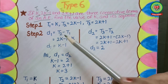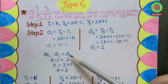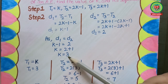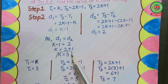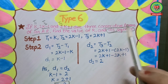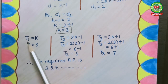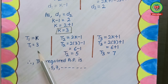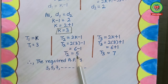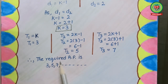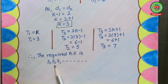As the three consecutive terms are in AP, their common differences are equal. We equate d1 and d2, and from that we get the value of k which is equal to 3. Now we also need to find the sequence by putting the value of k into the first, second, and third terms. The value of the first term is 3, second term is 5, and third term is 7. Therefore, the sequence of the required AP is 3, 5, 7, and so on.